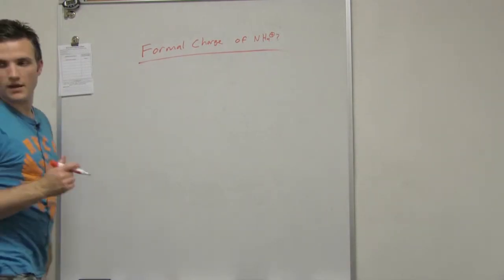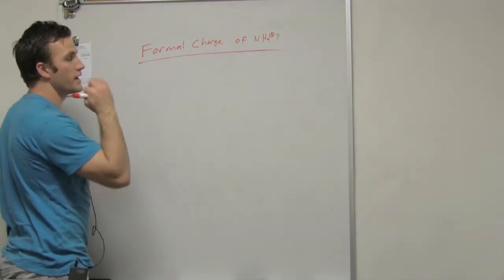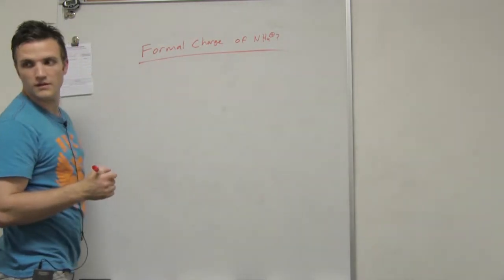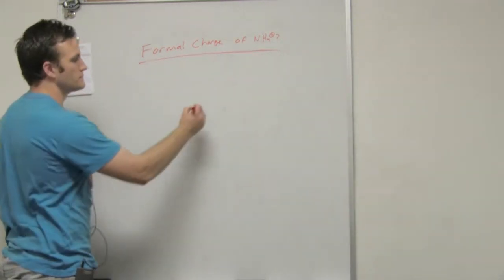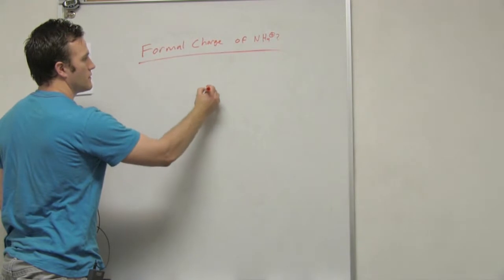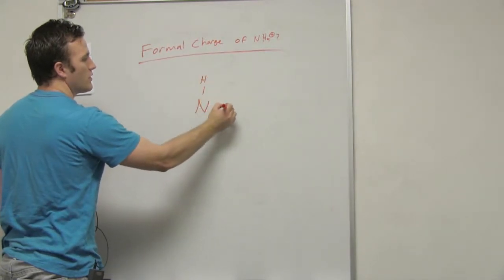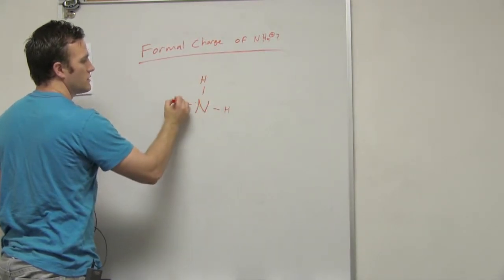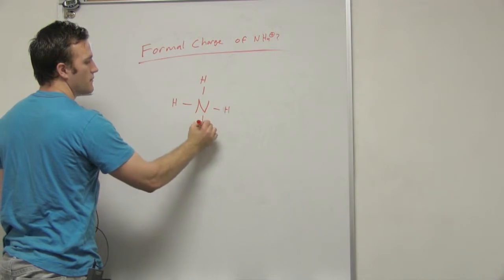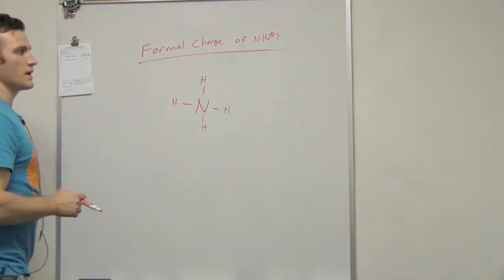First of all, tell me how would I draw NH4+, or ammonium, with four hydrogens branching off. Okay, any lone pairs on the nitrogen? No. Okay, good.